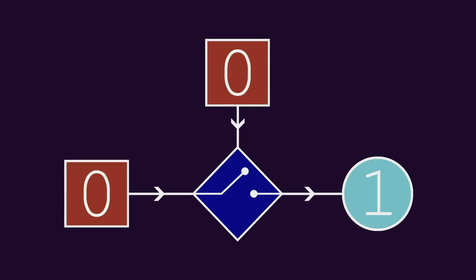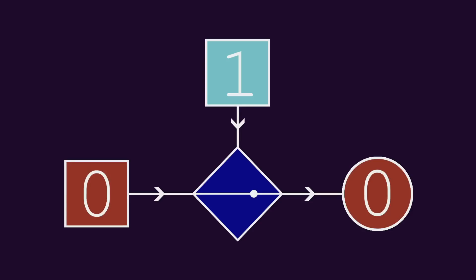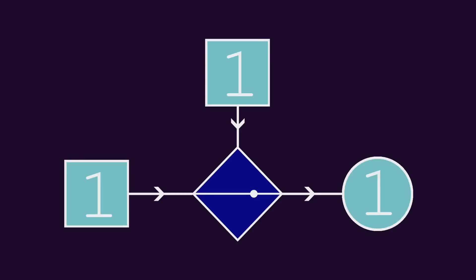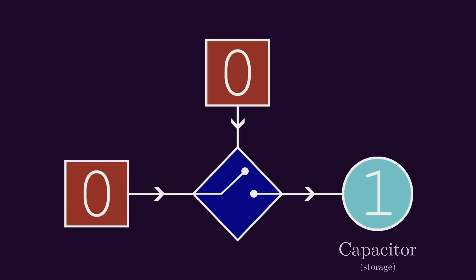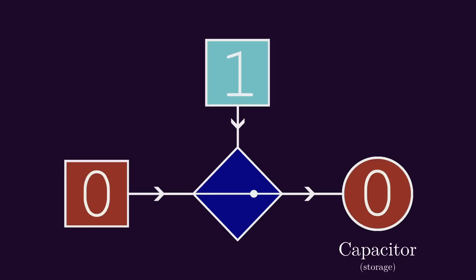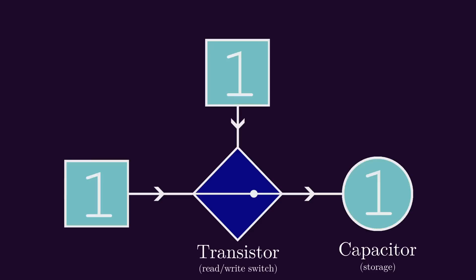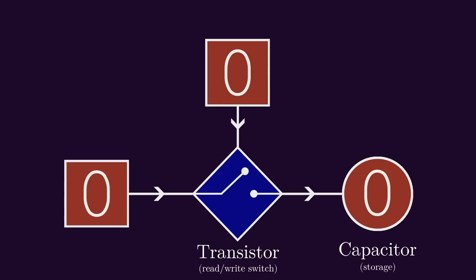I'm not talking about an actual physical memory cell here. I'm a software guy, not a hardware guy, so this is more like an idealized representation of the kind of memory cell you'd find in your computer's RAM. You've got your capacitor here, which stores a high or low voltage corresponding to a binary value of 1 or 0. Then here in the middle is your transistor, which acts like a switch turning on and off your ability to write to memory.